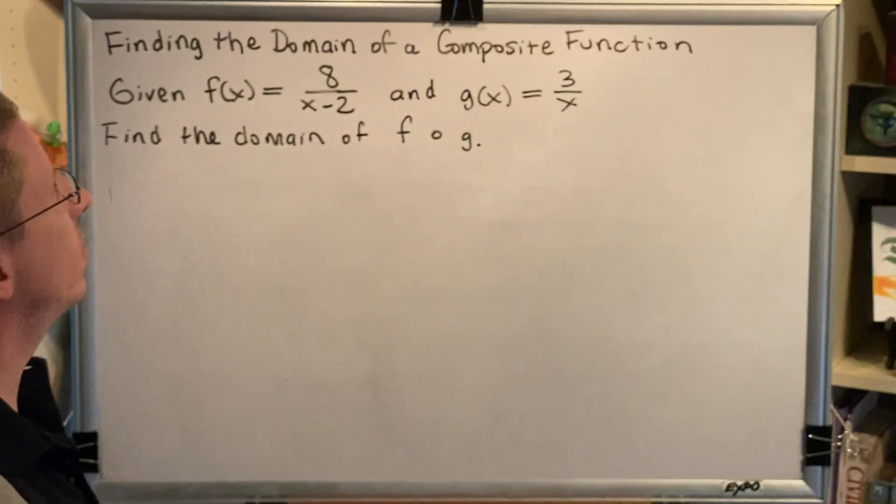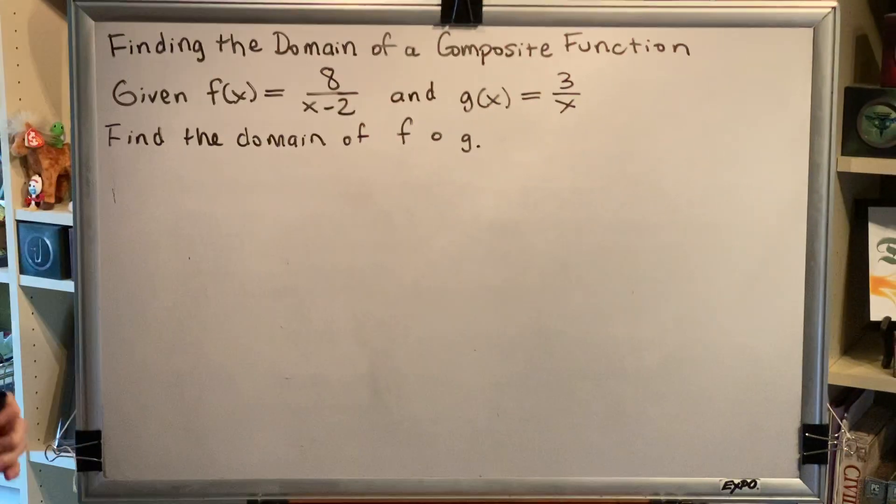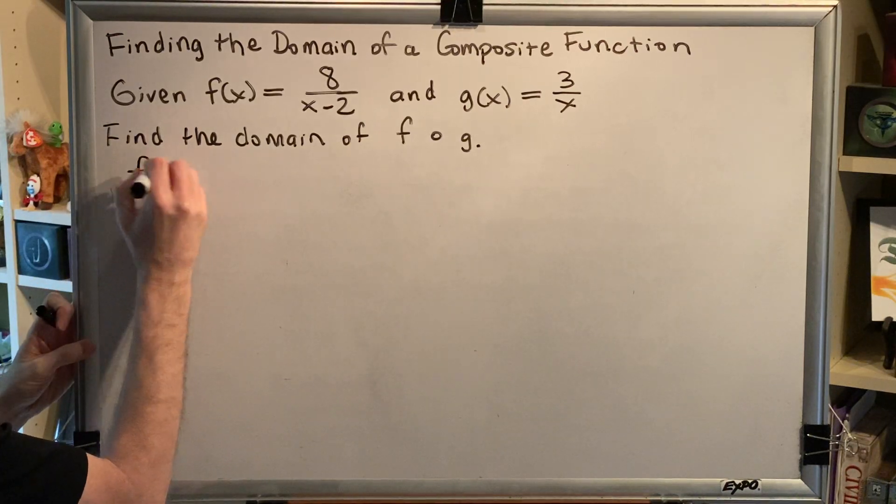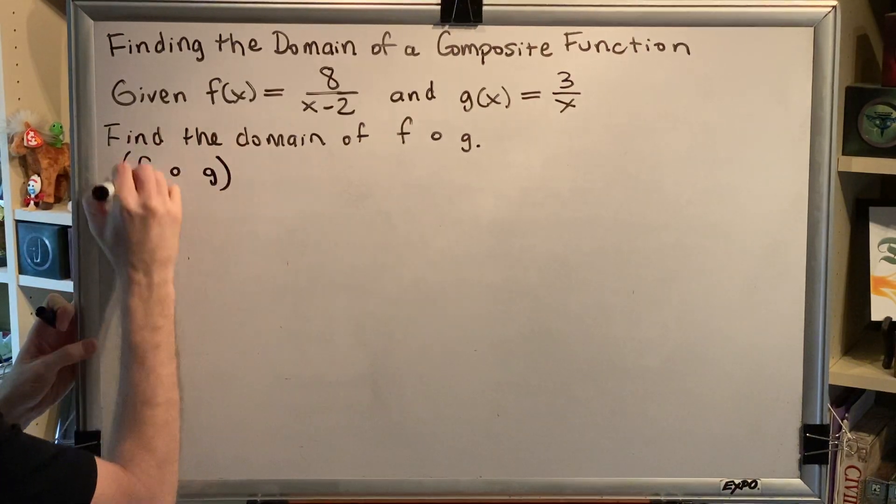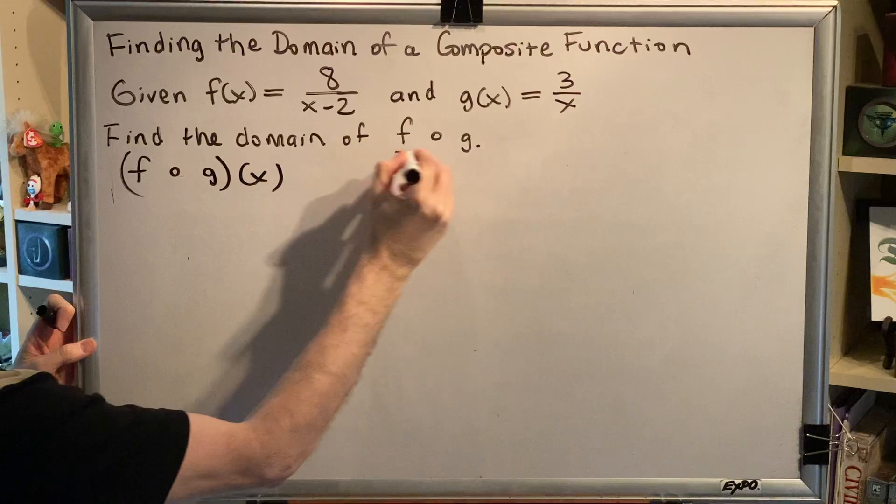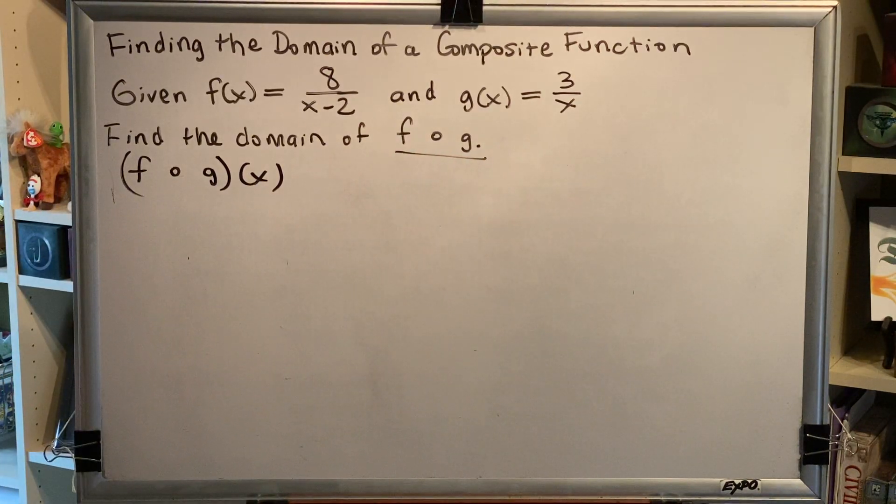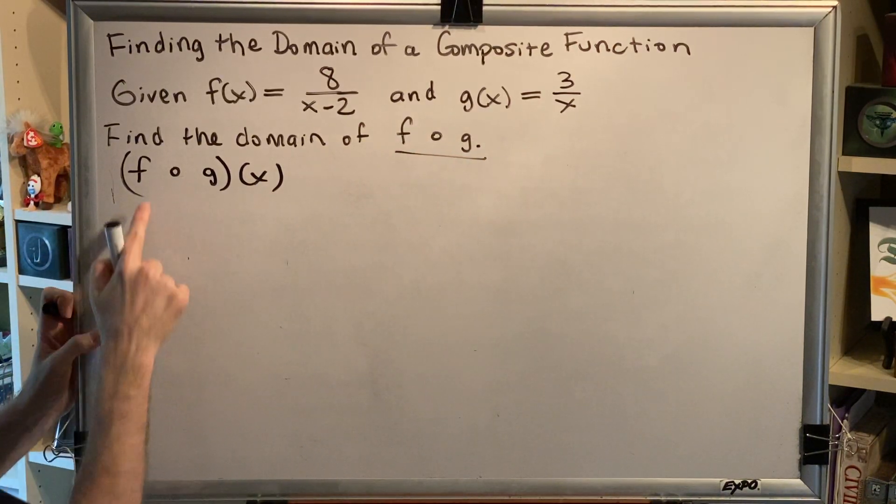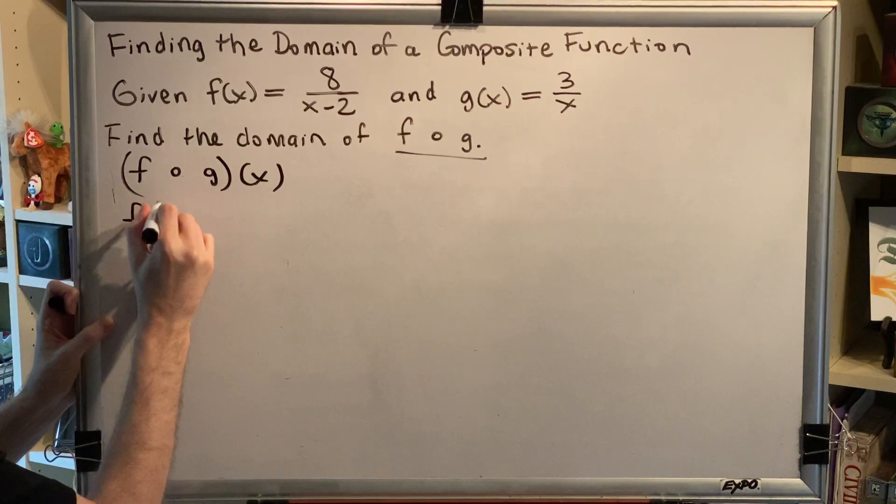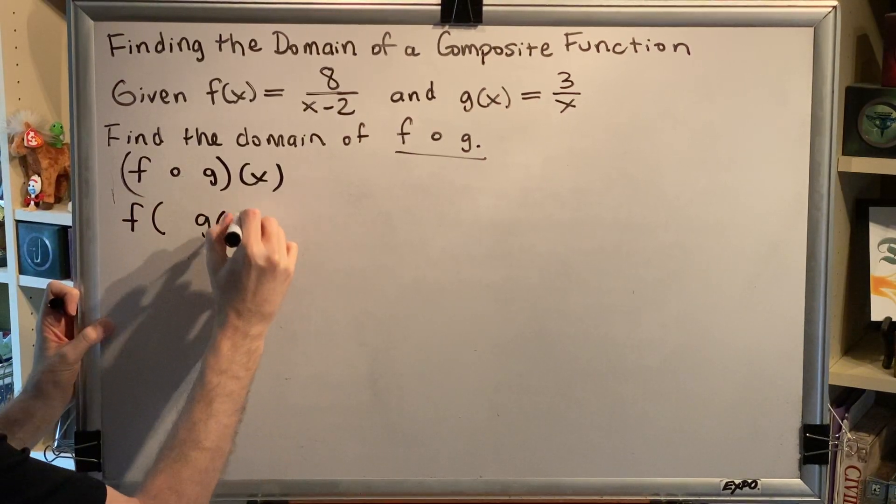So when we compose these together, we will get a function of x. In other words, we can write f composed with g of x. This and this are equal. Now rewrite using the definition, putting the letters in the order that we see them: f of g of x.